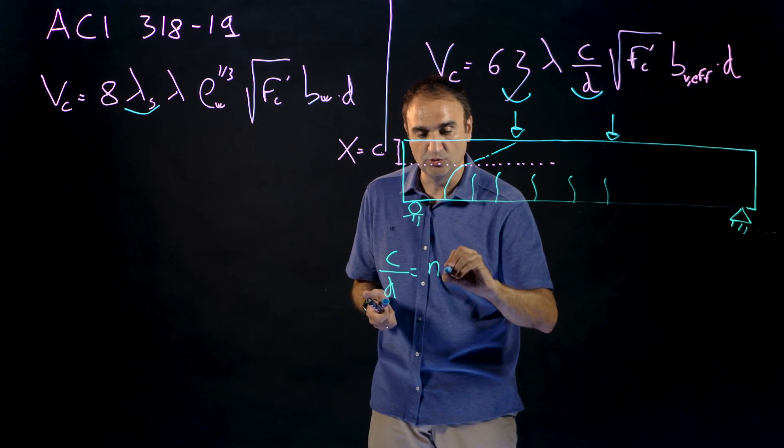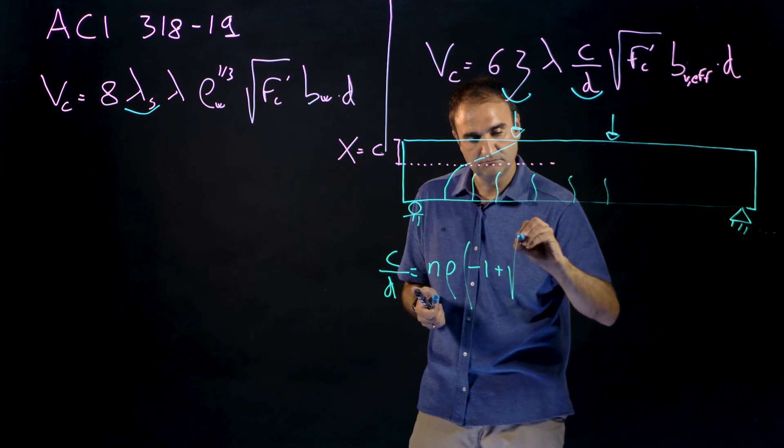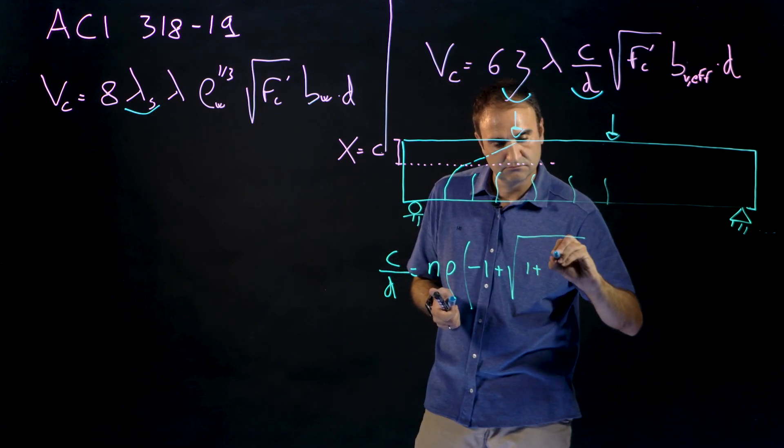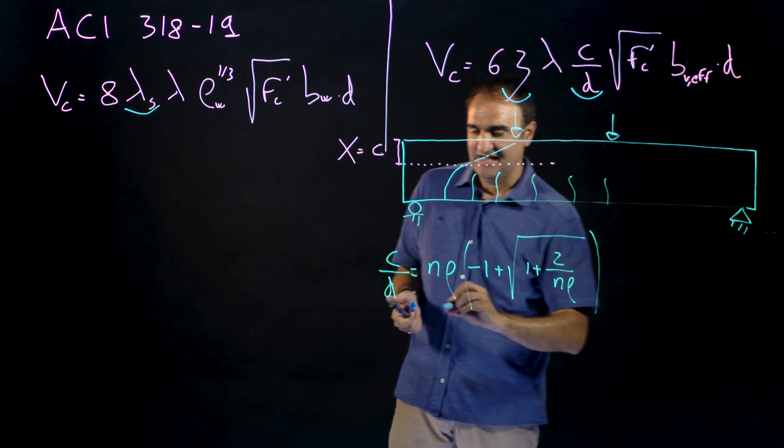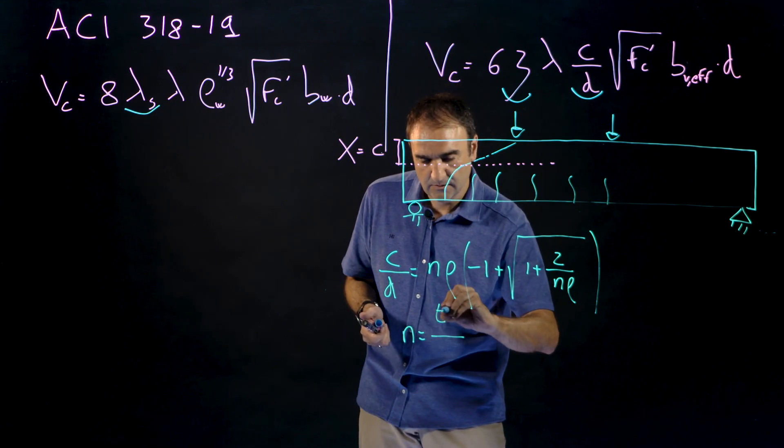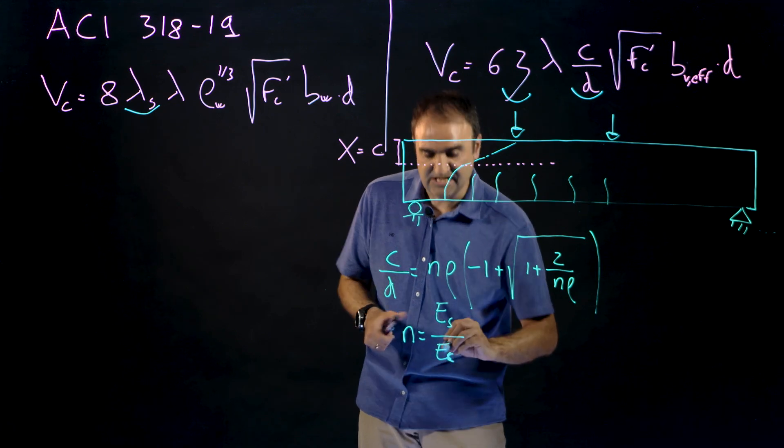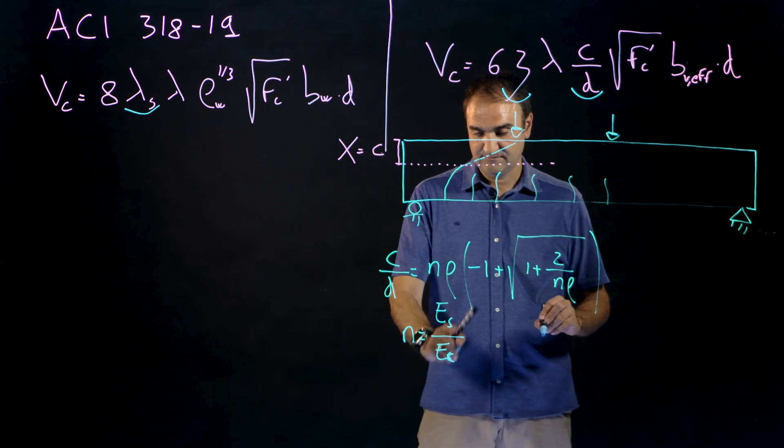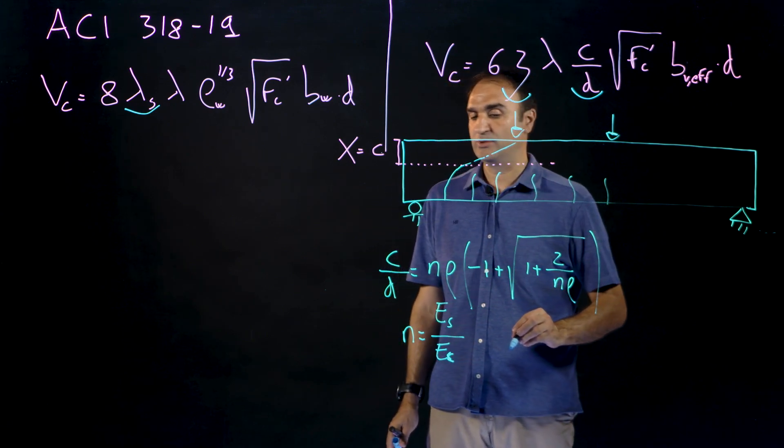So with c over d we can, it's a parameter to control the depth of the different zones of the critical crack, more vertical around 45 degrees or a little bit less and then more horizontal. And c over d can be obtained from an elastic analysis and you know that c over d is equal to this equation here.